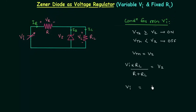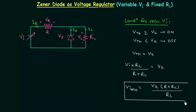VI is equal to VZ in bracket R plus RL divided by RL. I will call this input voltage minimum input voltage, and this is the condition for minimum input voltage. Now we'll find out the condition for maximum input voltage.